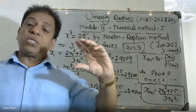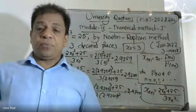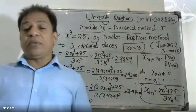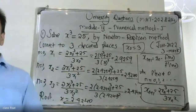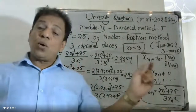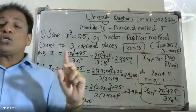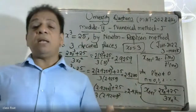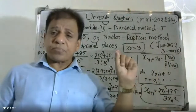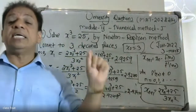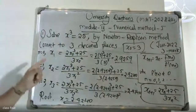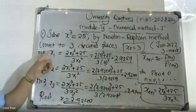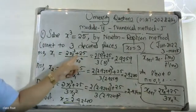The root lies between 2 and 3. To choose x₀, we check the modulus of f(2) and f(3). Since modulus of f(3) is less than modulus of f(2), we take x₀ equal to 3. We then apply the formula: xₙ₊₁ = (2xₙ³ plus 25) divided by 3xₙ².